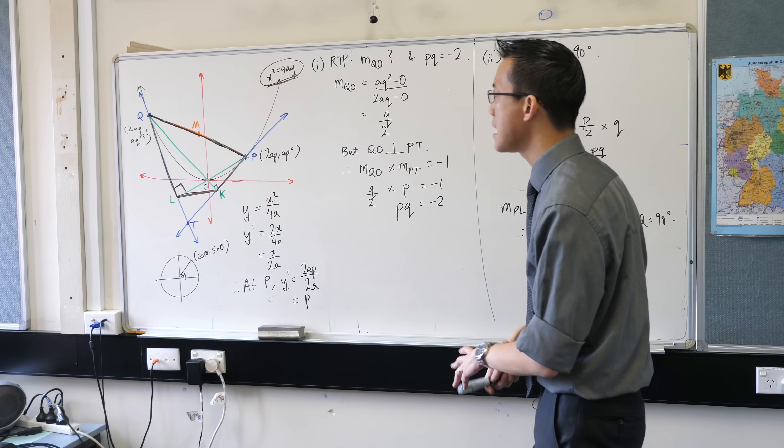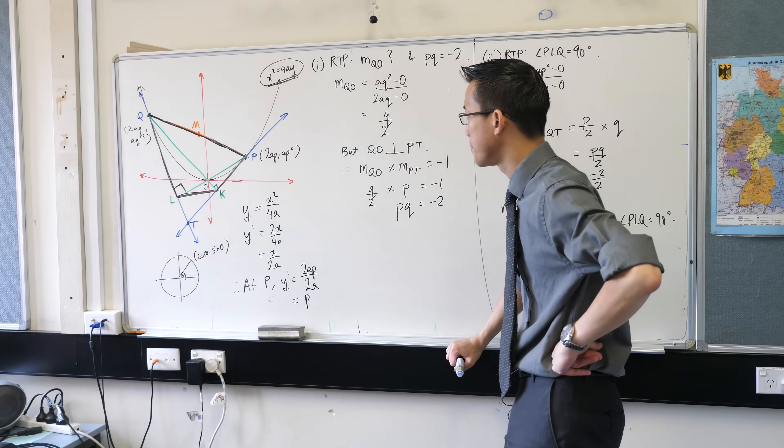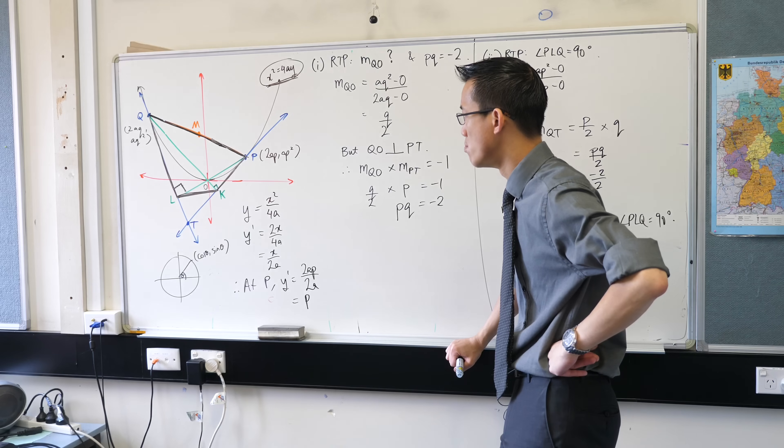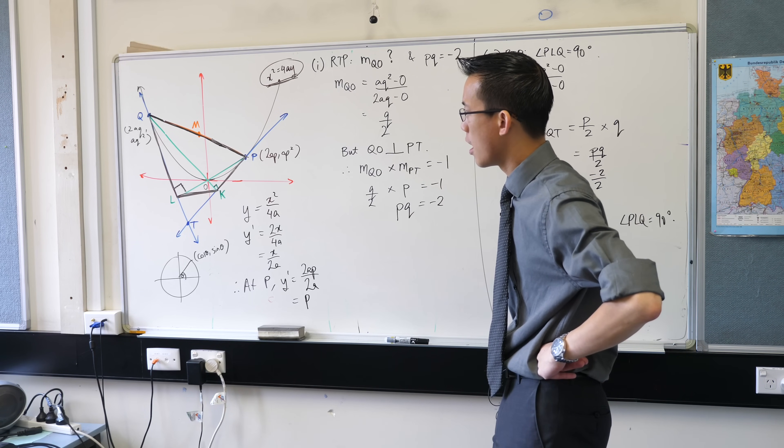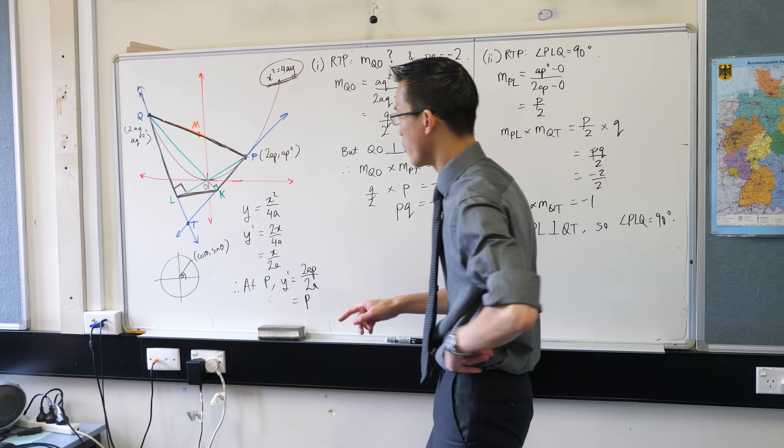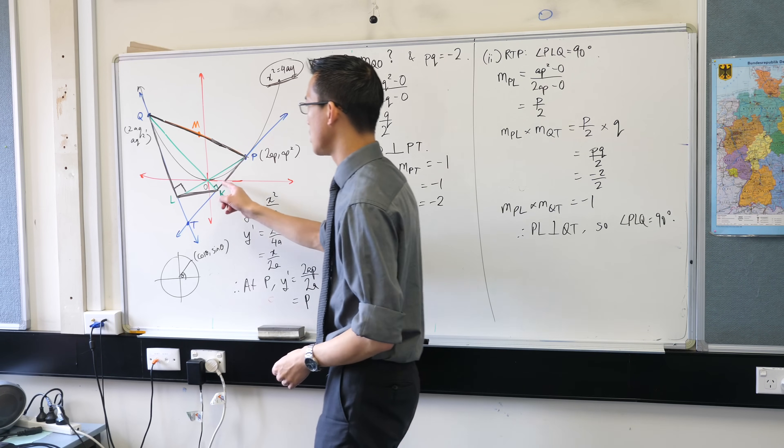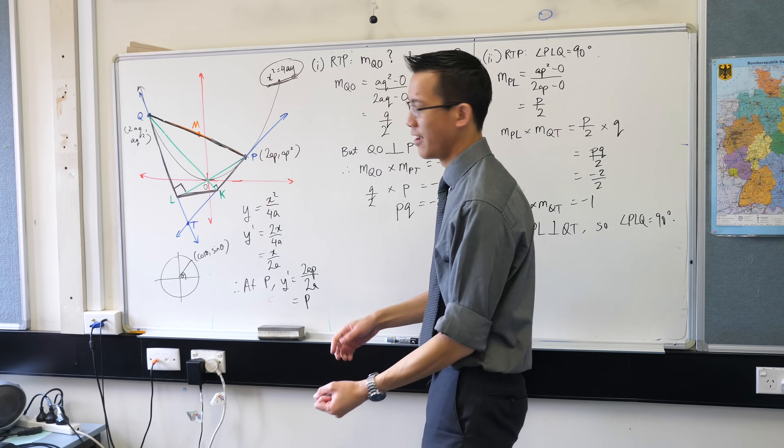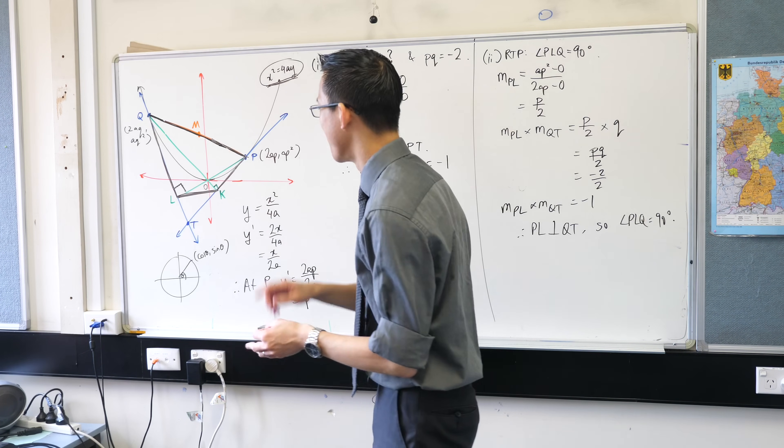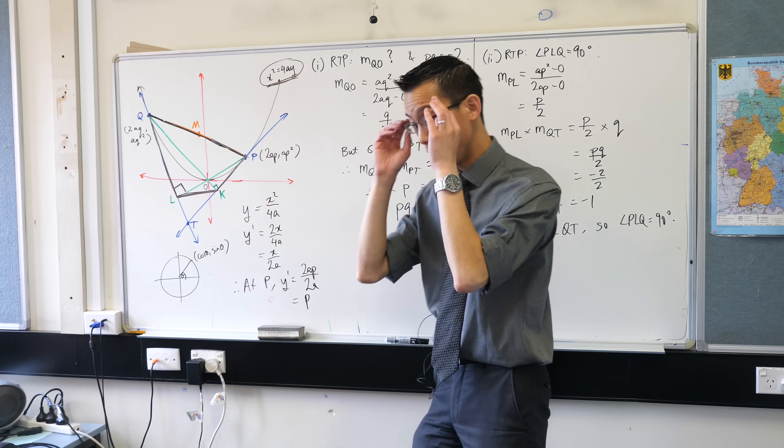When we think about PQLK what kind of a quadrilateral is it? Now I can see from part 1 and 2 all I've really established is these two right angles. That's really all I've done and it doesn't really look like it's not a rectangle not a square not a parallelogram but you've got these guys now you need to think really hard.